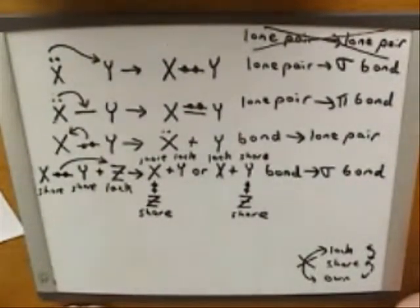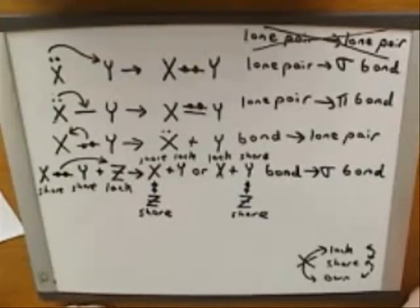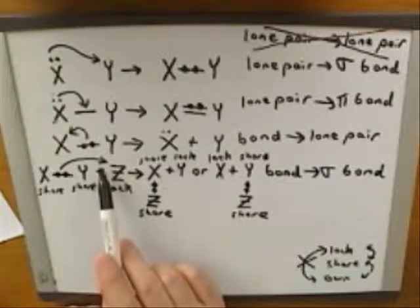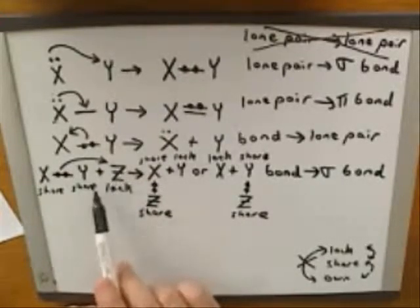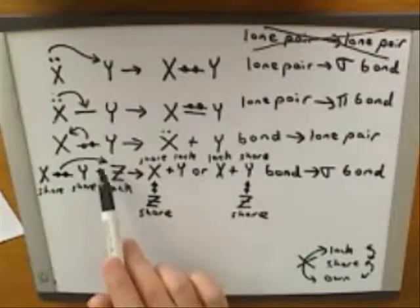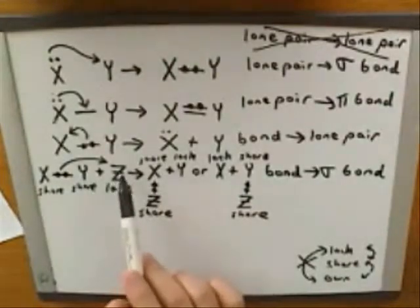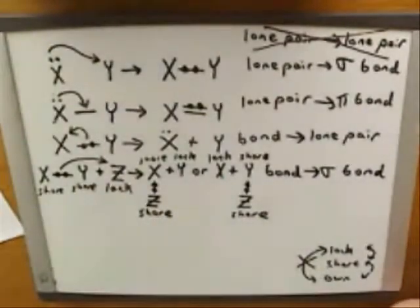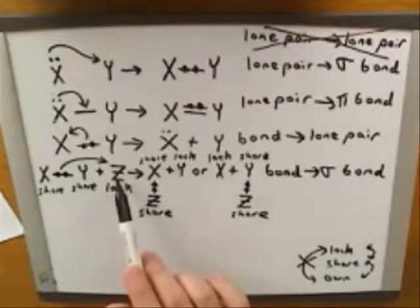Of all four transitions we've seen so far, this one is the trickiest and most confusing. The first issue is that it's difficult to interpret the head of the arrow. If you were in a hurry, it would be easy to think the head of the arrow means that Z is going to gain the electrons as a lone pair — but that's wrong. We now have the tools to see why it wouldn't make sense for Z to gain the electrons as a lone pair.